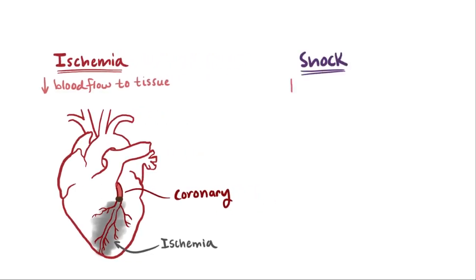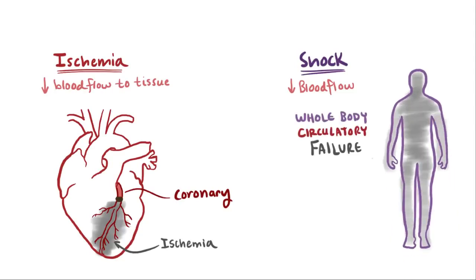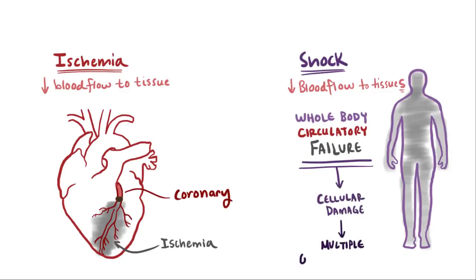Shock is like ischemia, but on a global scale. In other words, it's the whole body's circulatory failure, where blood flow to tissues is dangerously low, leading to cellular injury, possibly damaging multiple organs, and even leading to multiple organ failure if not treated immediately.